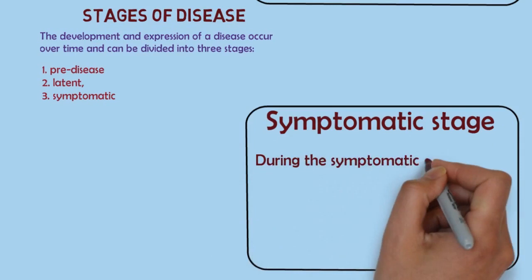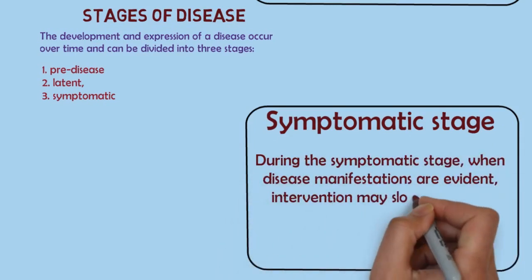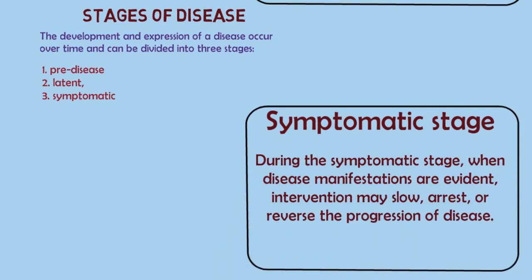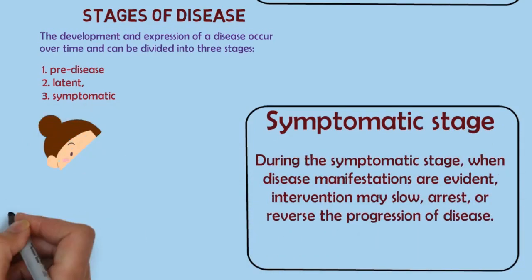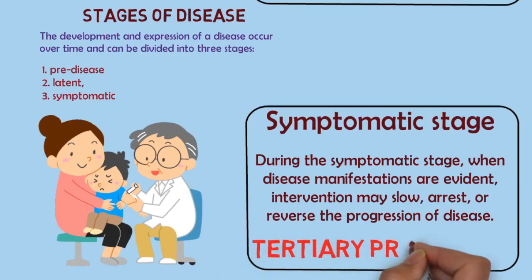During the symptomatic stage, when disease manifestations are evident, intervention may slow, arrest, or reverse the progression of disease. This is called tertiary prevention.